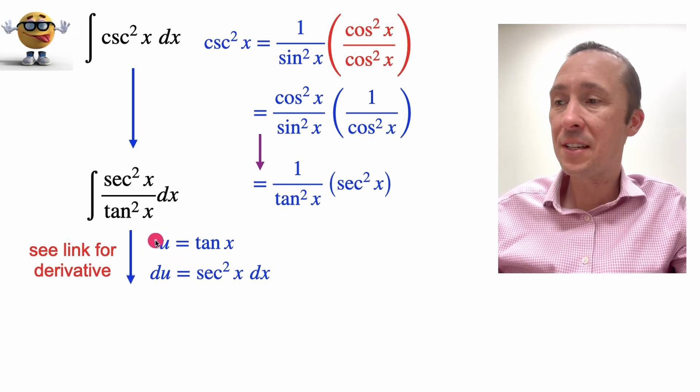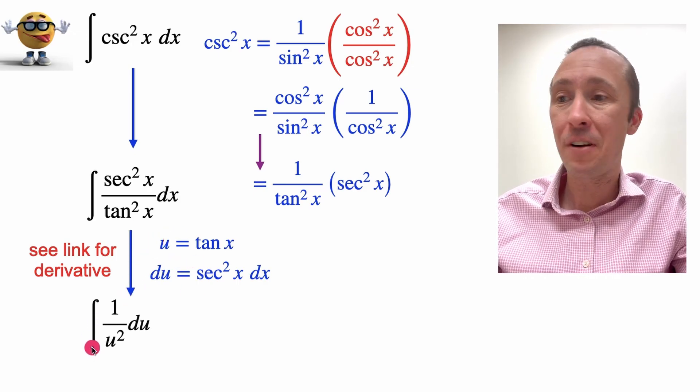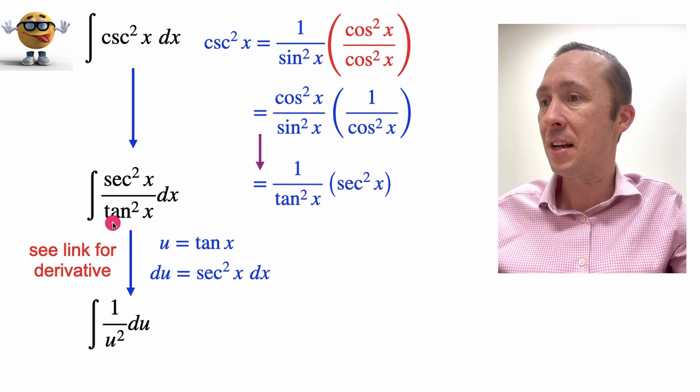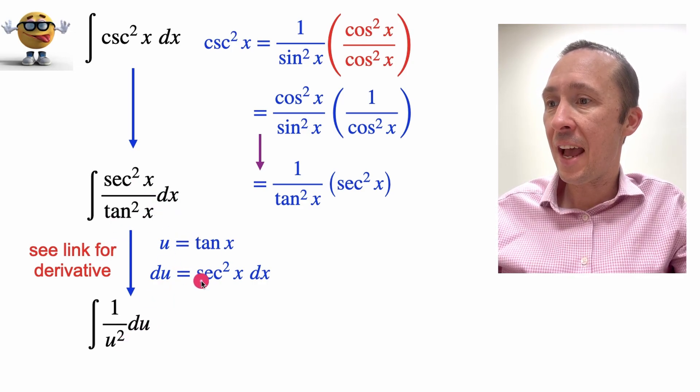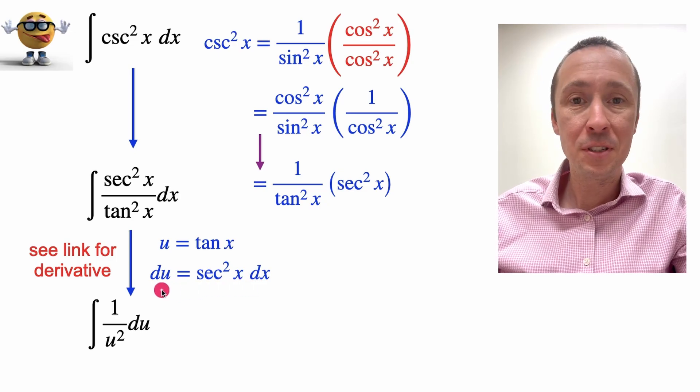So with this, if we substitute that in, we're now only integrating 1 divided by u squared because tan x is u. So that's u squared. And secant squared dx, secant squared dx equals du.